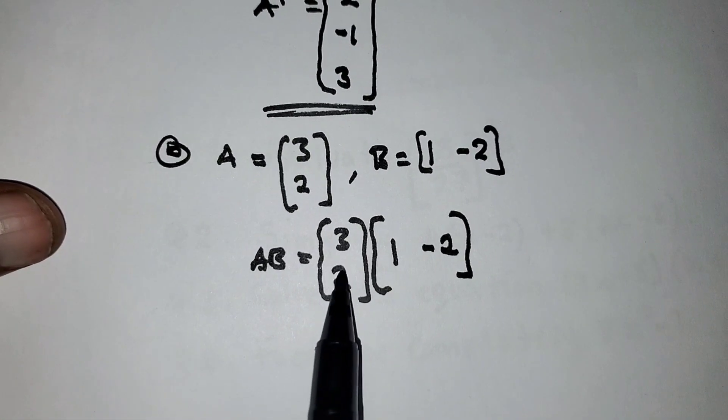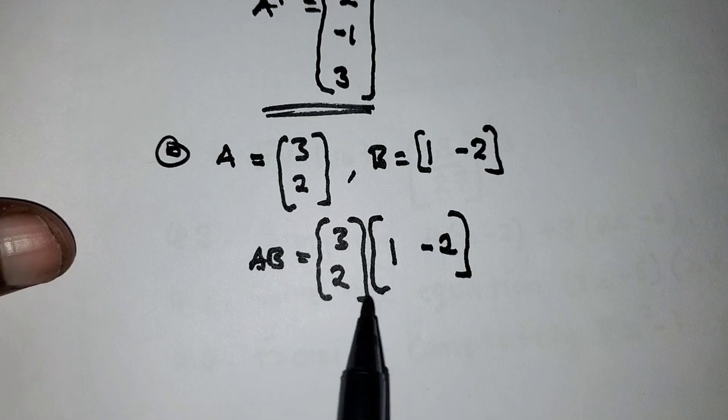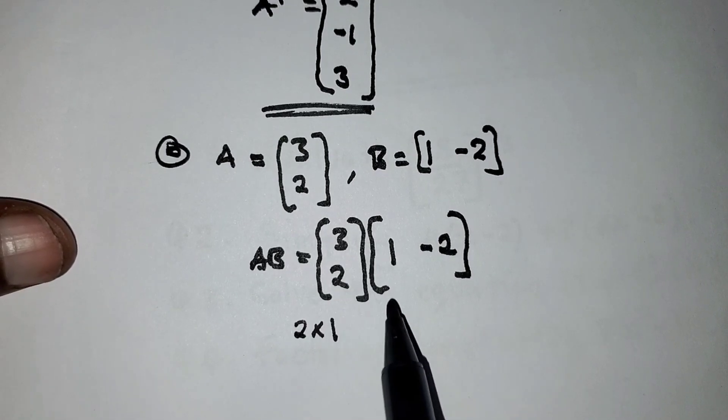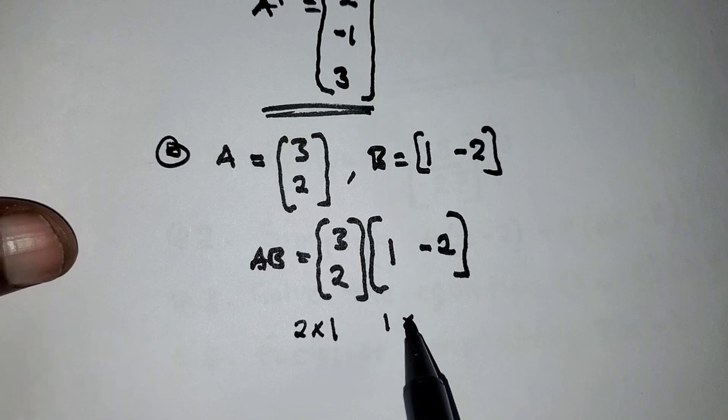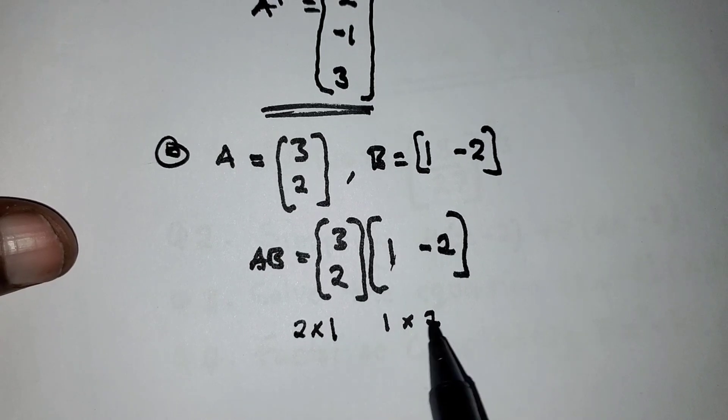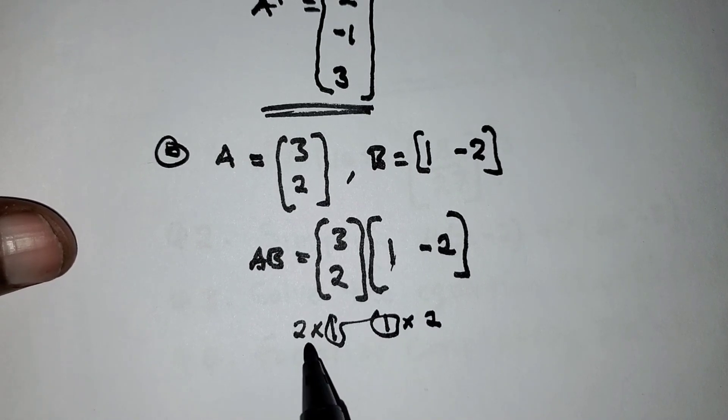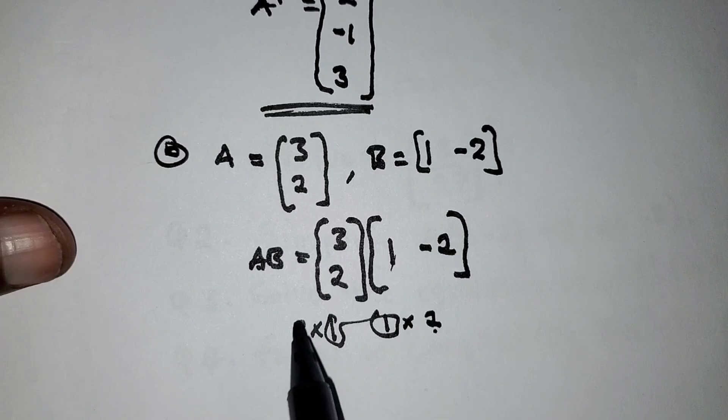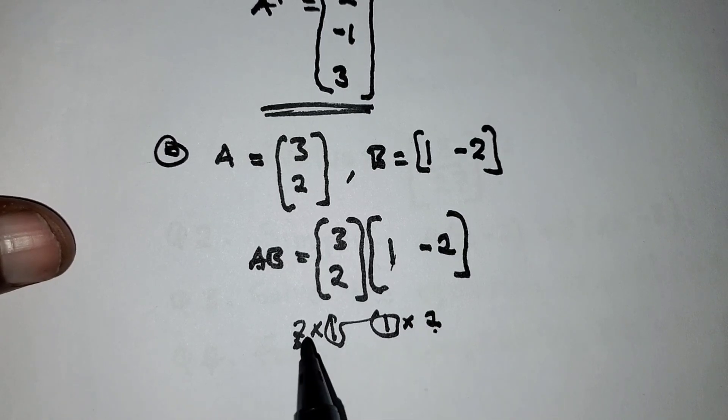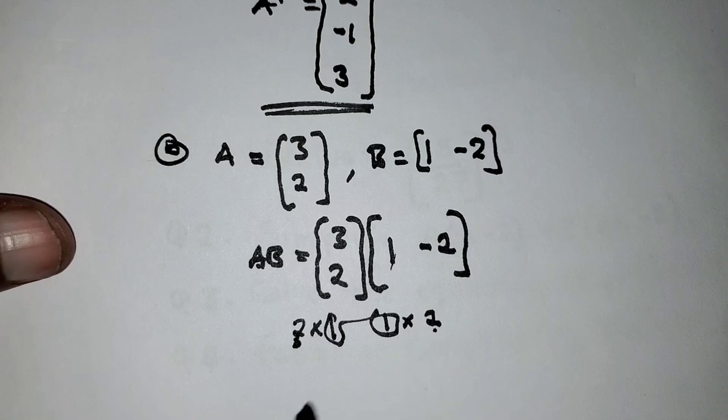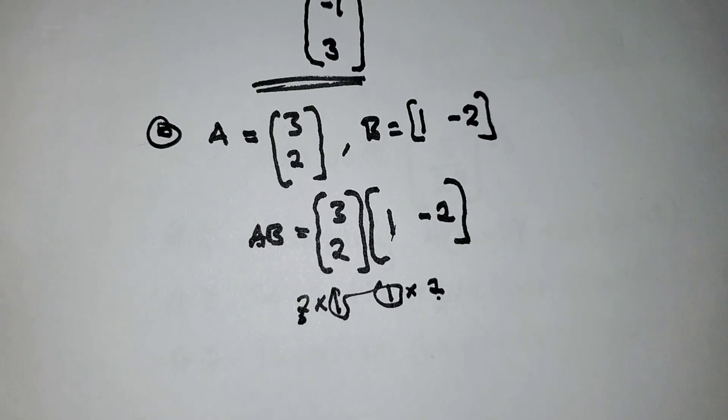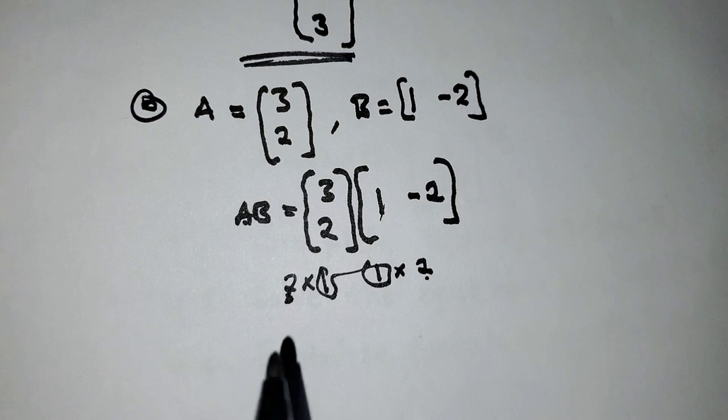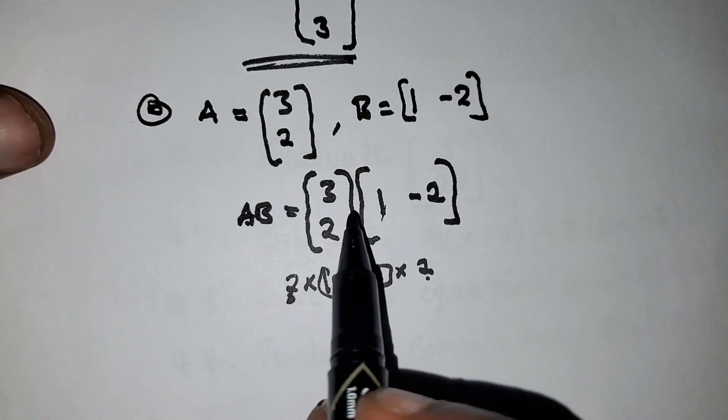The order of this matrix is 2 by 1, and this one is 1 by 2. So our matrix should be a 2 by 2. Our answer should be a 2 by 2 matrix. Remember multiplying rows by column.